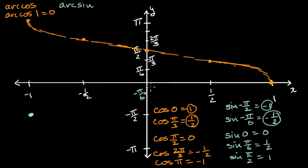Arc sine of zero is zero. So we go right through the origin. And then arc sine of one half is pi over six. If we input one half, we're gonna get to pi over six. And then last but not least, arc sine of one is pi over two.